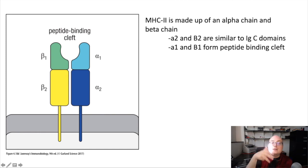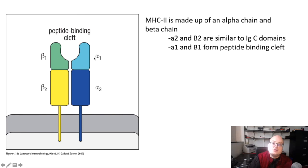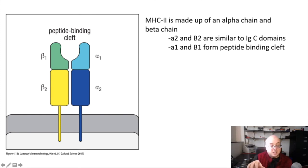These structural themes happen over and over again in all the molecules we're discussing in this lecture. For MHC class 2, remember that it's alpha 1 and beta 1 that form the peptide binding cleft and hold the antigen so it can be presented, whereas alpha 2 and beta 2 are more like constant domains. That's a broad overview of the MHC molecules' structure.